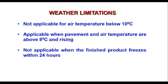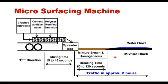Weather limitations for microsurfacing: it is not applicable when air temperature is below 10°C, it is applicable when pavement and air temperature are above 8°C and rising, and it is not applicable when the frost period is within 24 hours. In the microsurfacing machine, crushed aggregates are fed from a bin; cement, additive, and water are mixed together first, then polymer-modified emulsion is added. This mixture is loaded into the spreader box — mixing time is around 15 to 45 seconds — and then laid on the pavement surface. At the time of laying the mixture is brown and homogeneous, with a breaking time of 60 to 120 seconds, after which it becomes black. The surface can be opened to traffic in approximately 2 hours.